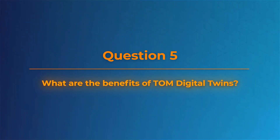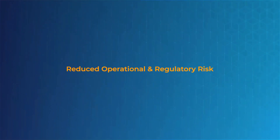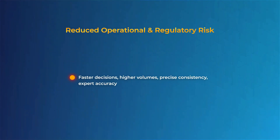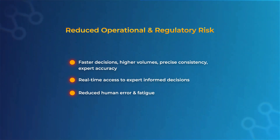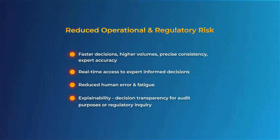TOM digital twins reduce operational and regulatory risk by making faster decisions at higher volumes with precise consistency and expert accuracy, providing real-time access to expert-informed decisions, reducing human error and fatigue, and through explainability, decision transparency for audit purposes or regulatory inquiry.